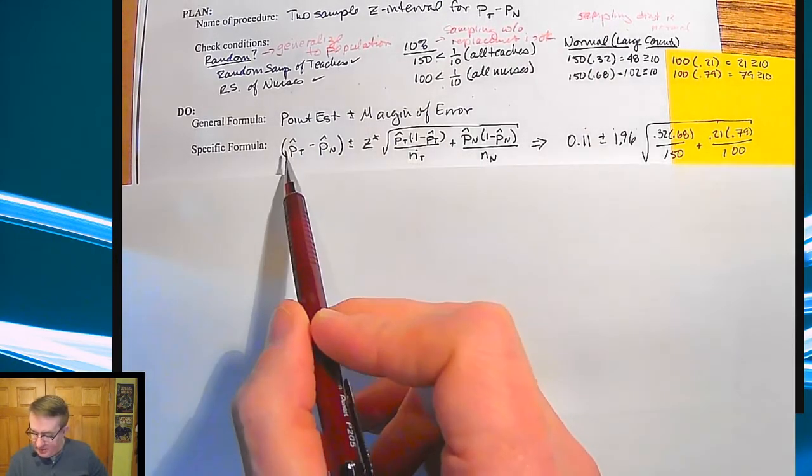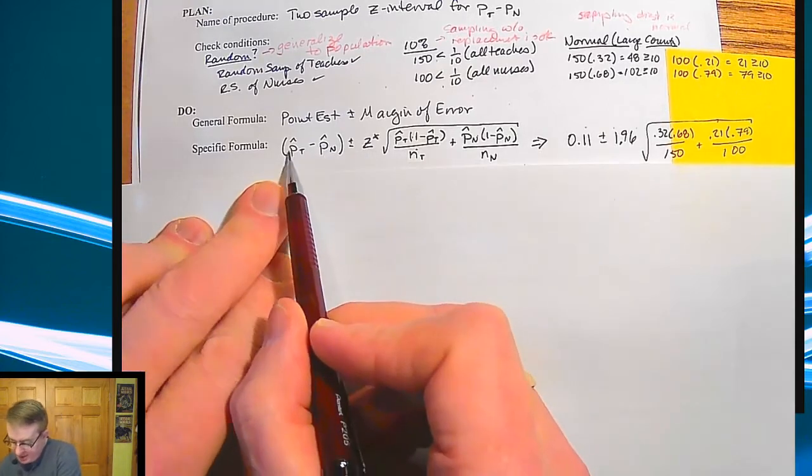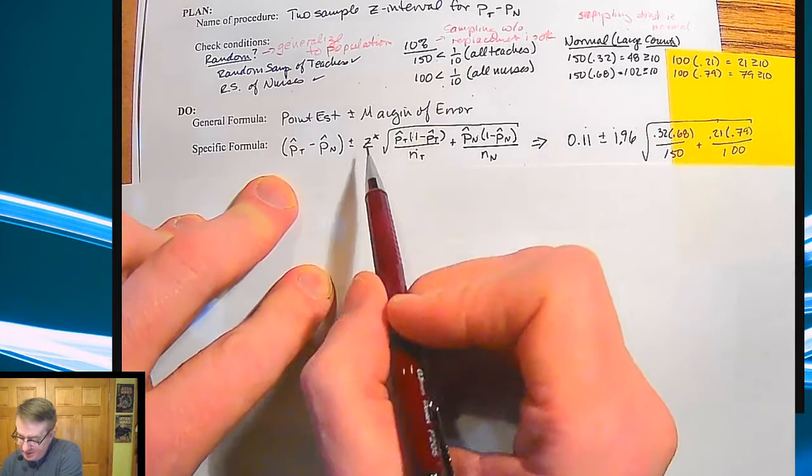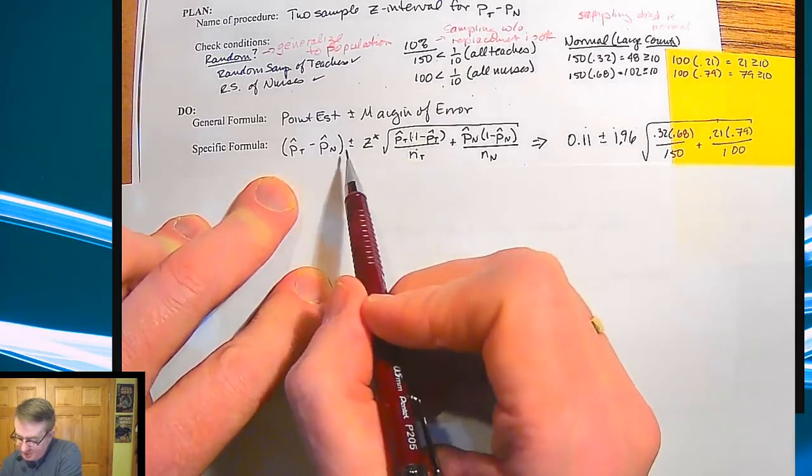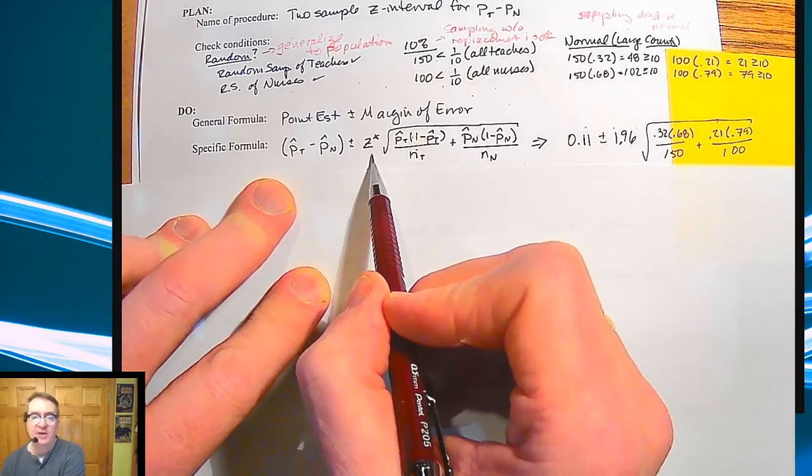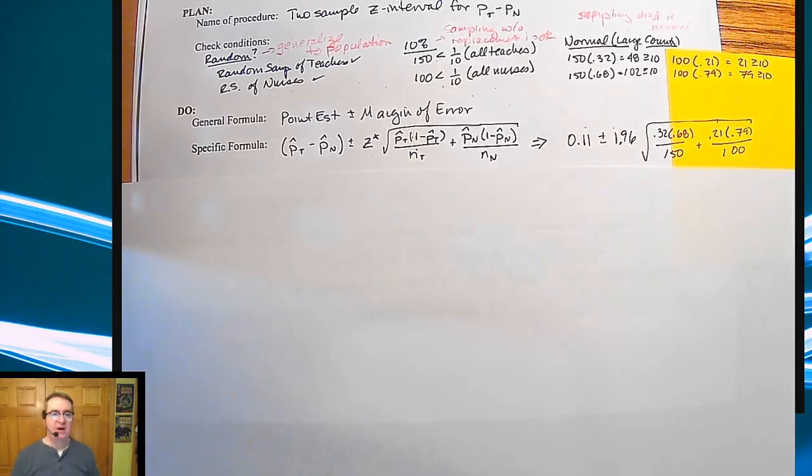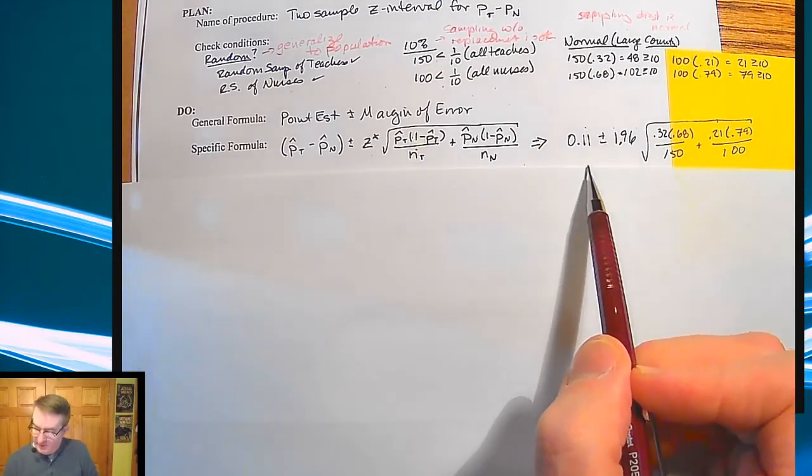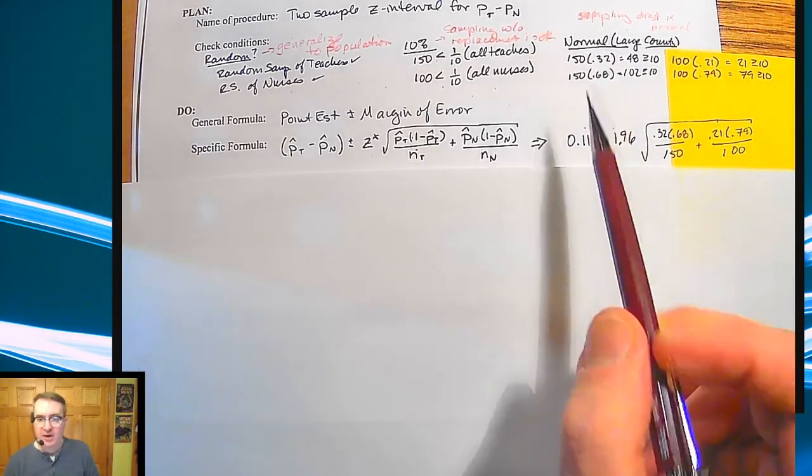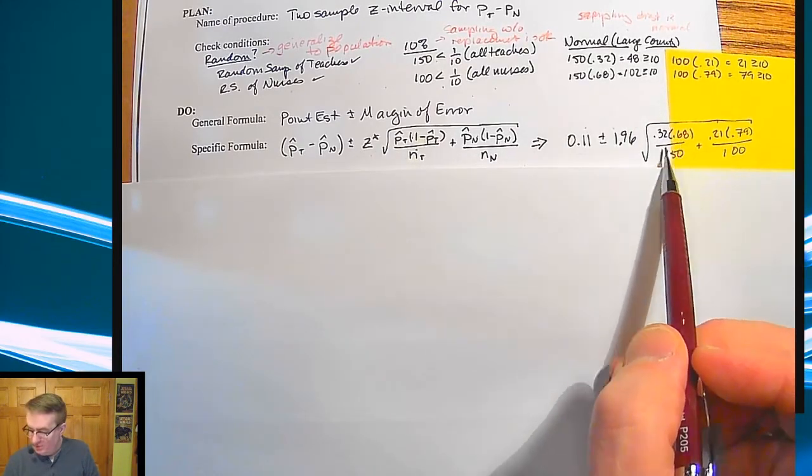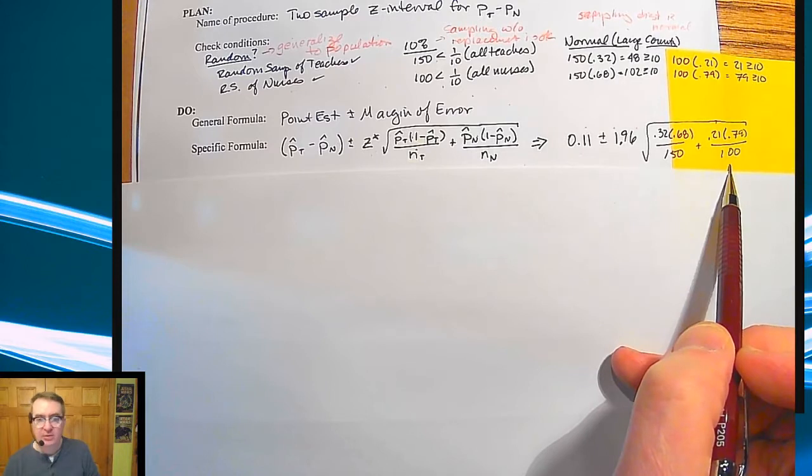So again, the proportion of teachers in the sample minus the proportion of nurses in the sample, who both have second jobs, you've got your critical value here. And then this big thing here is how you find standard error of a difference of proportions. And then right here is the math involved. So we have our 0.11 from above, a critical score of 1.96, and then all of our proportion values and our n values here.